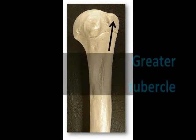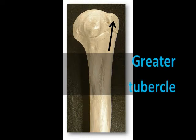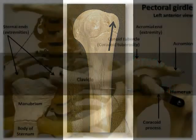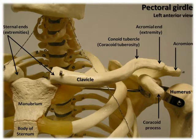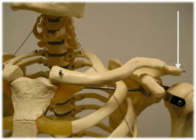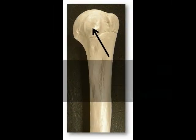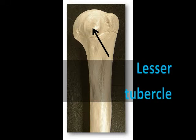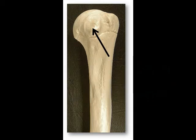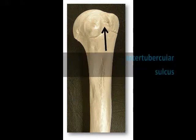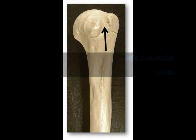The greater tubercle is a lateral projection distal to the anatomical neck. You can feel this bump if you palpate on the lateral side of your shoulder area, just inferior to the acromion of the scapula, which is also palpable. The lesser tubercle is the anterior projection just inferior to the anatomical neck. The intertubercular sulcus is the groove found between the greater and lesser tubercles.